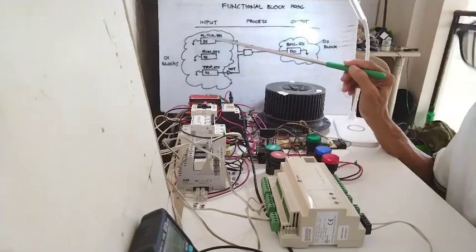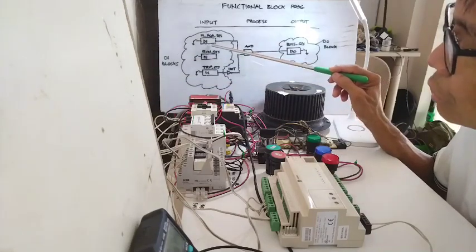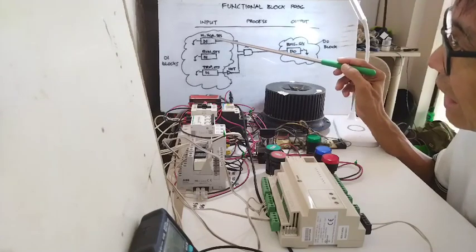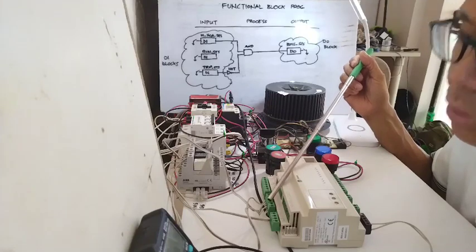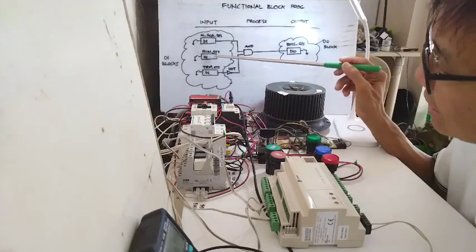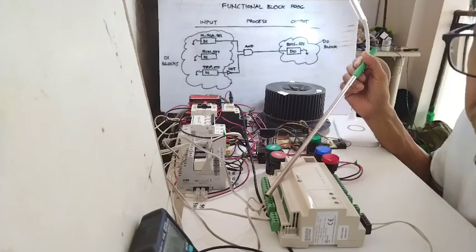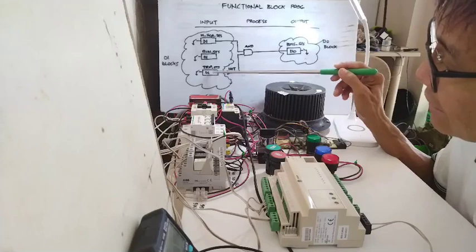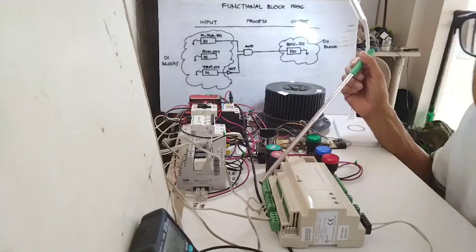These DI blocks need to be mapped — in building management system we call it mapping. When you say map, you need to map these points to the channel of your DDC. This DI one will be mapped to our first binary input. Then that binary input one will be cabled to the relay in your control panel. DI run status will be mapped to controller channel 2, BI 2. This third block, DI trip status, will be mapped to our controller's binary input number 3.